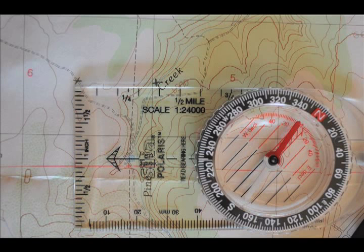Now, if you happen to have a 1 to 24,000 scale on your compass, you can make the measurement without having to do any math. That's about 4 tenths of a mile there.